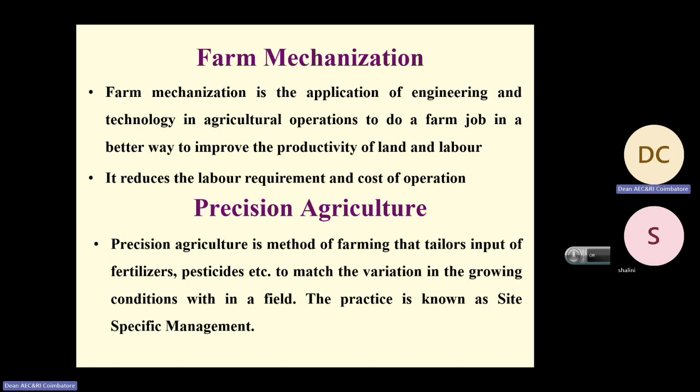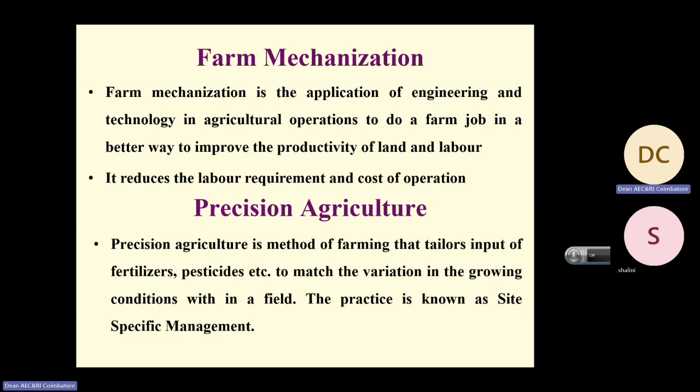Dr. Swaminathan thought of increasing agricultural yield and wanted to develop agriculture in our country. His first concept was: if you give more water to the crop, yields will increase. With this concept, the government started constructing dams to conserve water and irrigate fields. Irrigation levels increased, and we started giving more and more water to crops. Yields started increasing — this was from around 1964 to 1985.